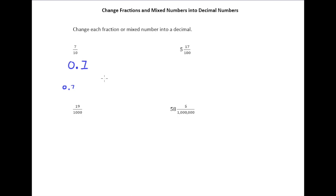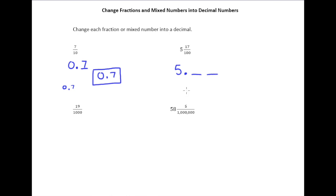So 0.7 is our answer there. Moving over to the next example, we do have a whole part, so I'm going to write 5 point. Then I look at the bottom number — it's 100 — so I want this to end in the hundredths place. Since there are two digits in 17 and two places to use, this becomes pretty easy: this becomes 5.17.